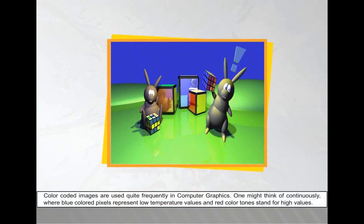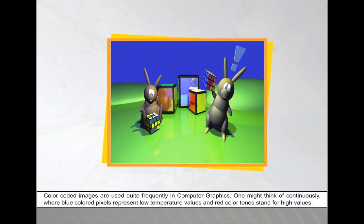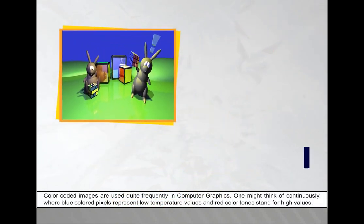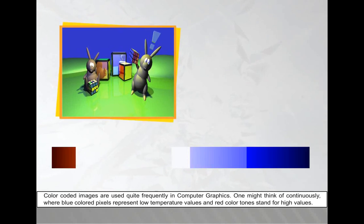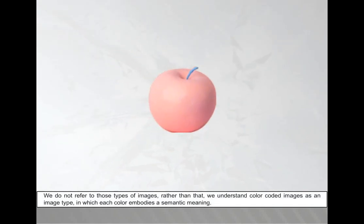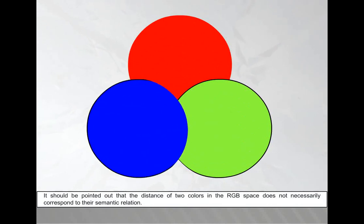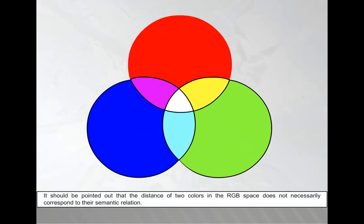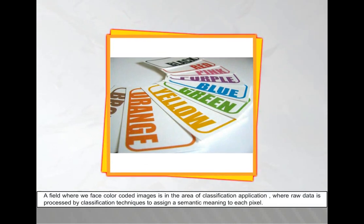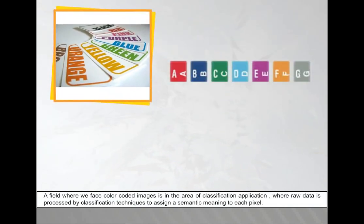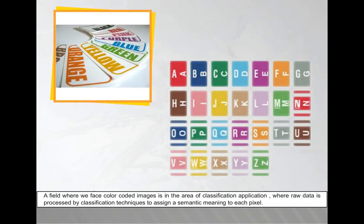Color-coded images are used quite frequently in computer graphics. One might think of continuously colored images as temperature maps where blue colored pixels represent low temperature values and red colored tones stand for high values. We do not refer to those types of images; rather than that, we understand color-coded images as an image type in which each color embodies a semantic meaning. It should be pointed out that the distance of two colors in the RGB space does not necessarily correspond to their semantic relation. A field where we face color-coded images is in the area of classification applications where raw data is processed by classification techniques to assign a semantic meaning to each pixel.